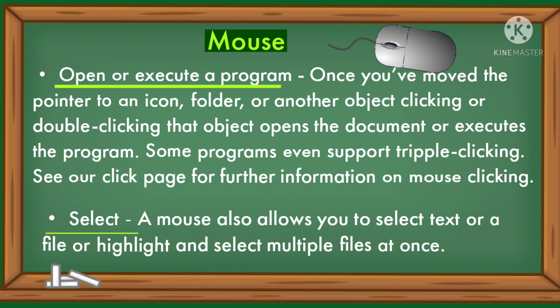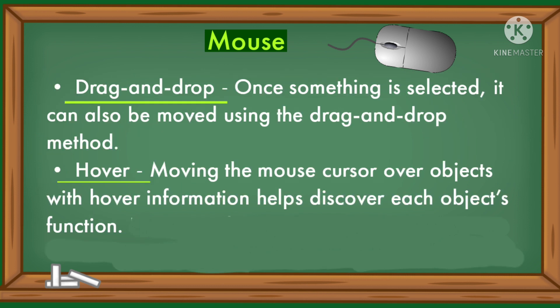Select: a mouse also allows you to select text or a file, or highlight and select multiple files at once. Drag and drop: once something is selected, it can also be moved using the drag and drop method. Hover: moving the mouse cursor over objects with hover information helps discover each object's function.